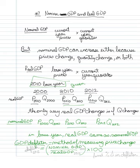Let's say it's the 2012 deflator number I want. My deflator for 2012 would be nominal GDP in 2012 divided by real GDP in 2012, times 100. I can then find the percentage change in my deflator numbers to get a good estimate of how much prices have changed.